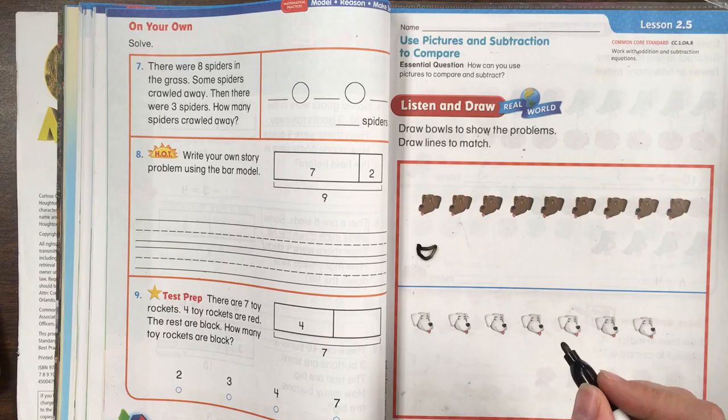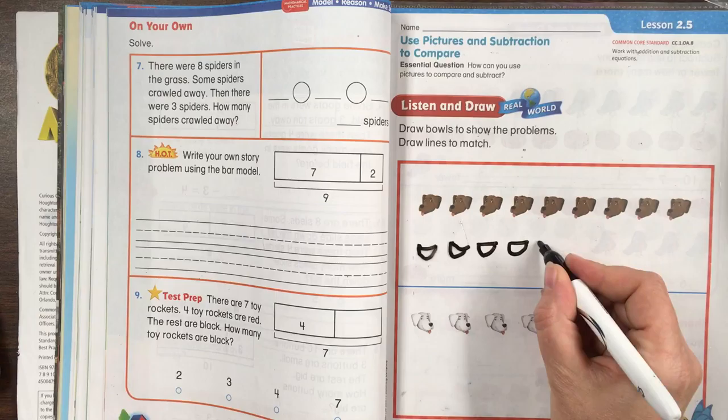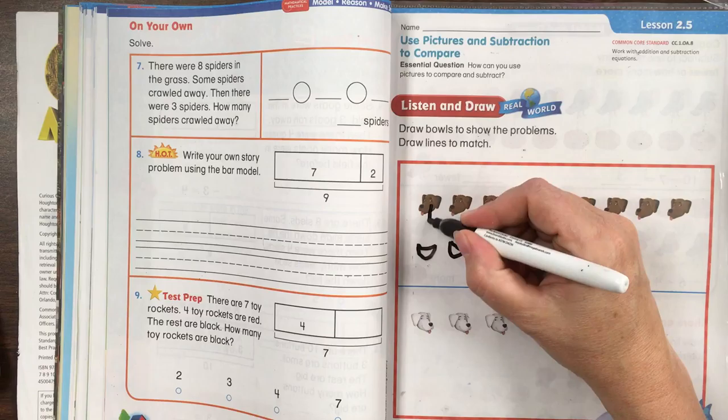So let's draw five bowls because it says there are five bowls and they don't have to be perfect bowls. One, two, three, four, five.